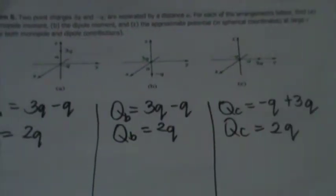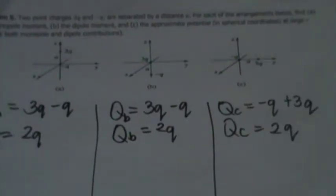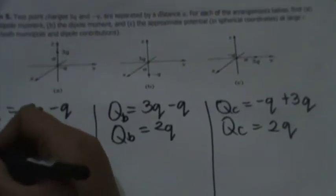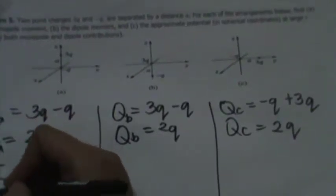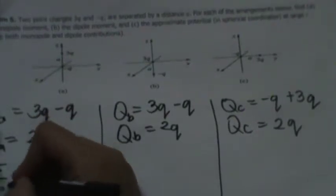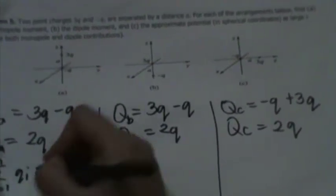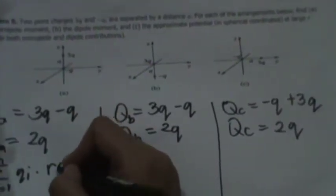For finding the dipole moment, we're given an equation to solve for it. We'll use this formula: vector P is equal to the summation from i equals 1 to N of Q_i times vector r-prime.